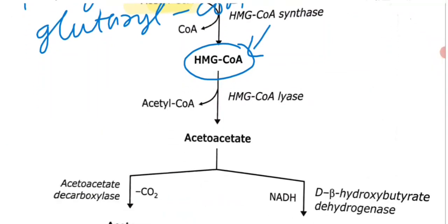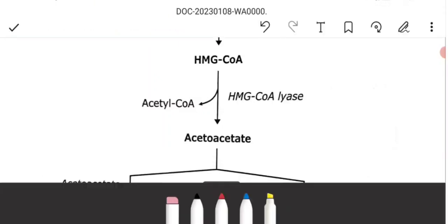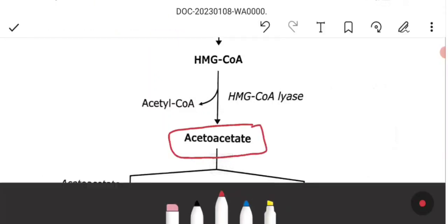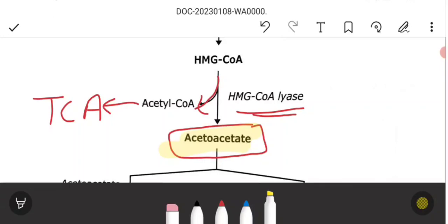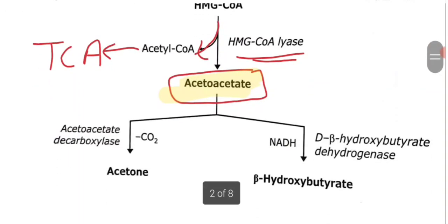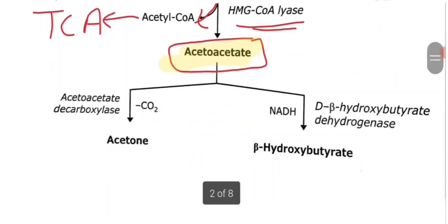The next step is HMG-CoA cleavage, which produces acetoacetate — our first ketone body. Acetoacetate can then be reduced to form beta-hydroxybutyrate. The enzyme involved in that conversion is beta-hydroxybutyrate dehydrogenase.